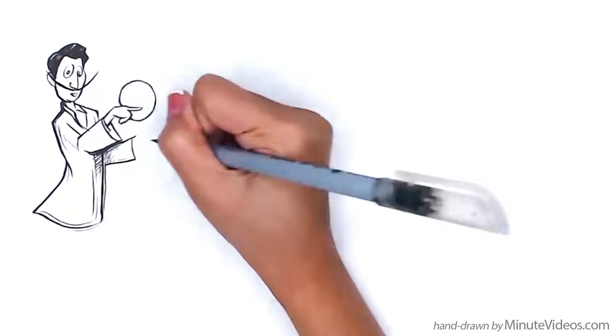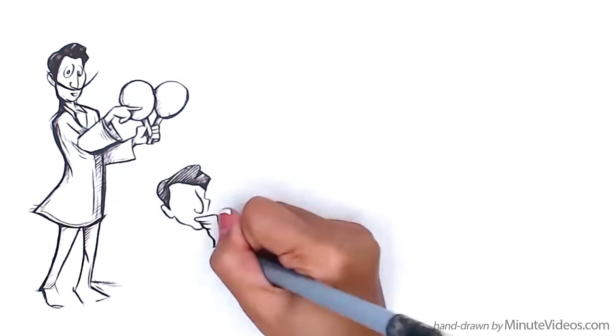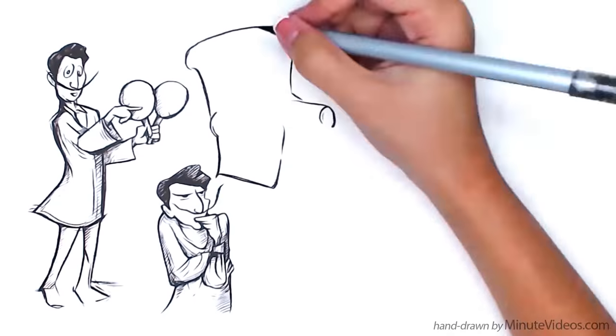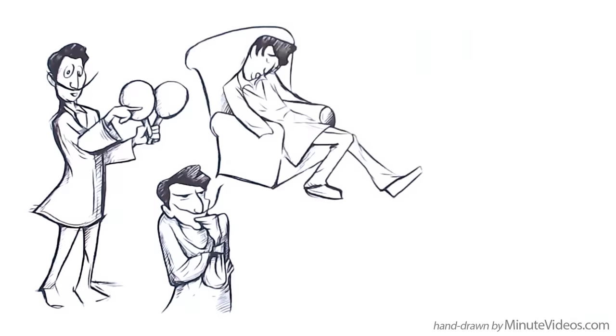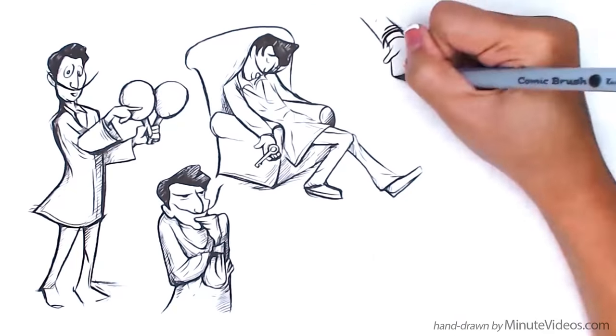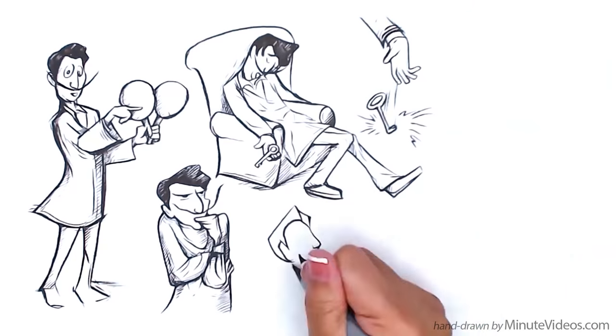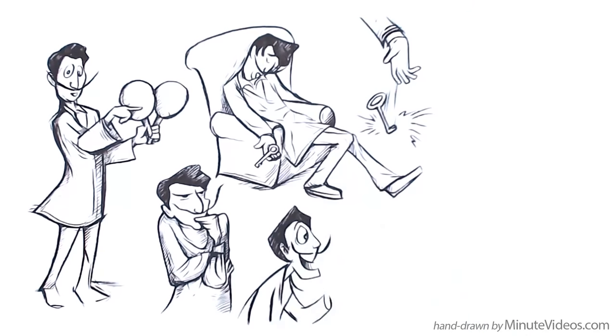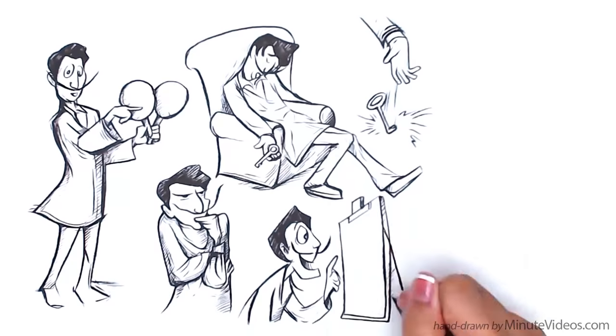Painter Salvador Dali was using the ping pong technique. After a round of focused work, Dali sat on his armchair to think and doze off. In one hand, he held a big key, and the moment he fell asleep, the key dropped. The sound of the key woke him, and he would go back to the canvas to continue his focused work.